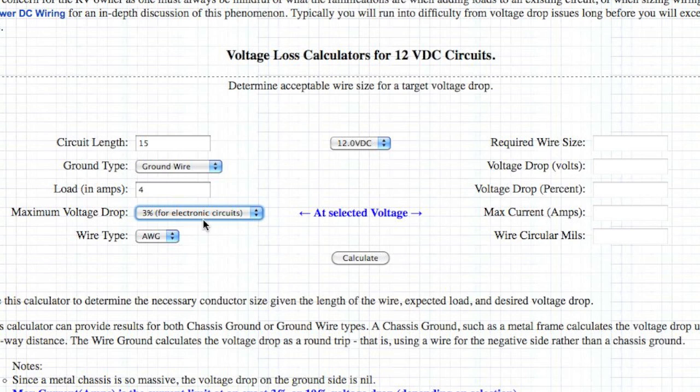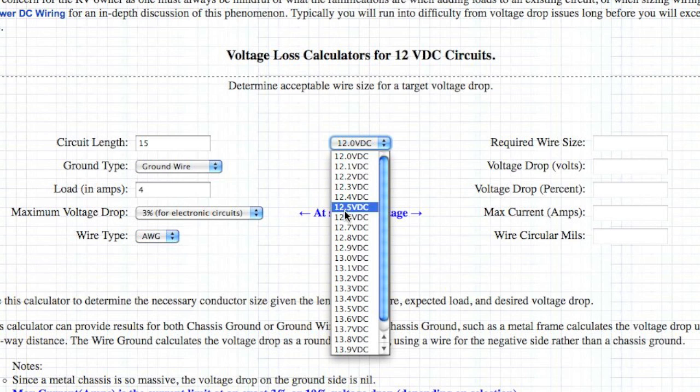So that's a pretty good set of criteria to use, really, in any application. So we're going to use 3% for electronic circuits, and for wire type, we have a choice of American Wire Gauge or Society of Automotive Engineers. When you're looking at marine wiring and automotive wiring, you may find some SAE, and when you look at boat wiring, you may find AWG or SAE or a combination of both, and in the RV you can find both as well. So we're going to go AWG, and normally we're at 12 volts. Let's just go with the 12.6 volts.